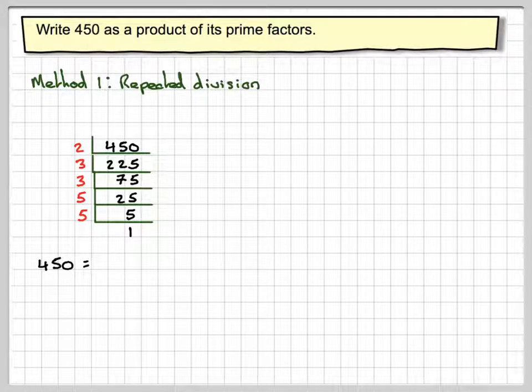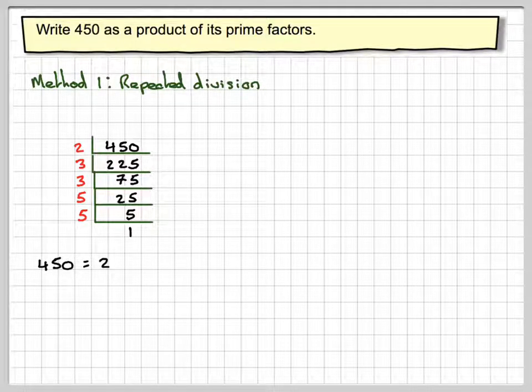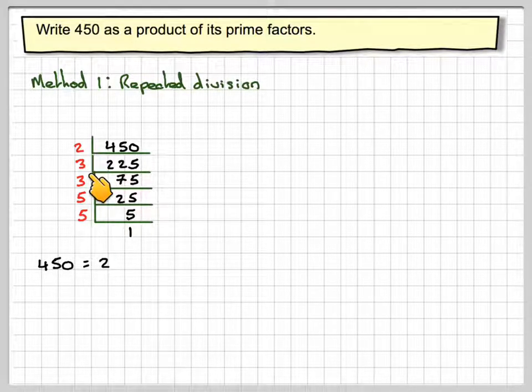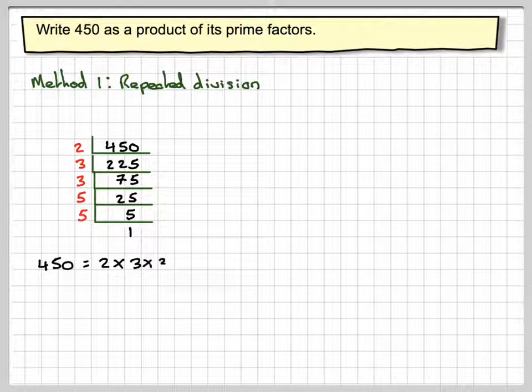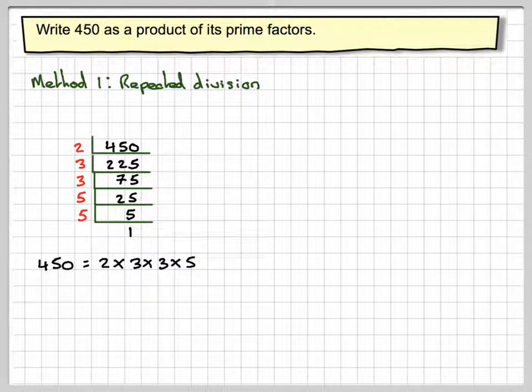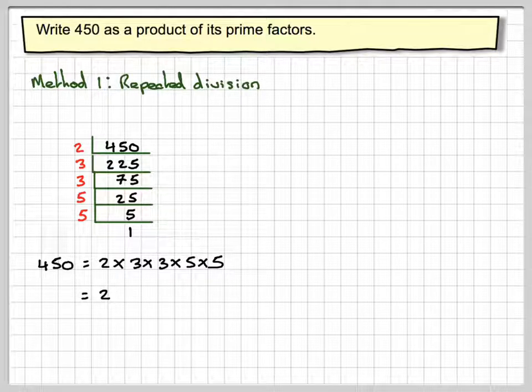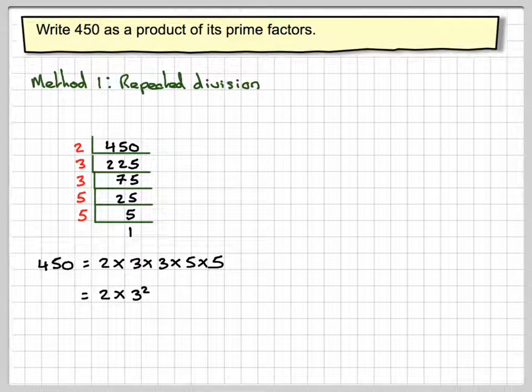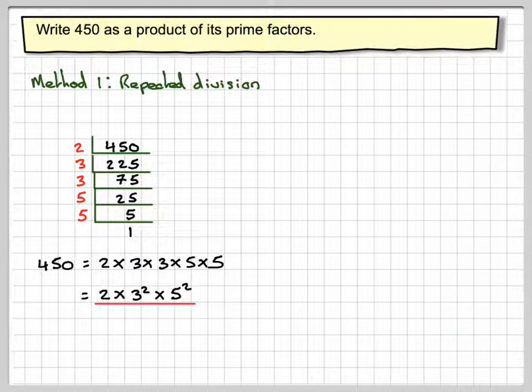Therefore, 450 will be two times three times three times five times five, and that gives you two times three squared times five squared.